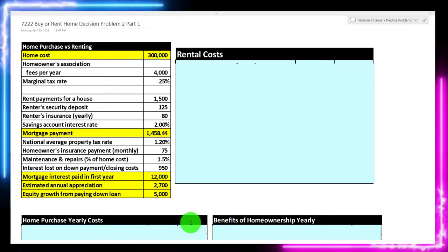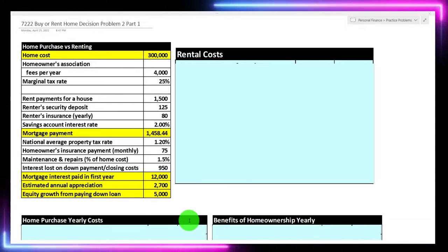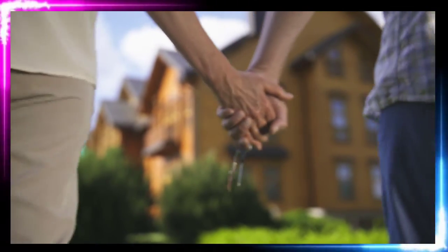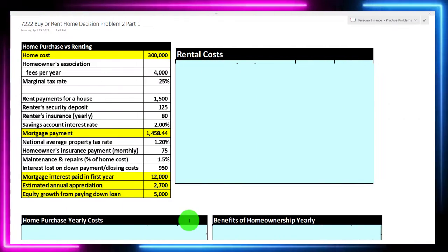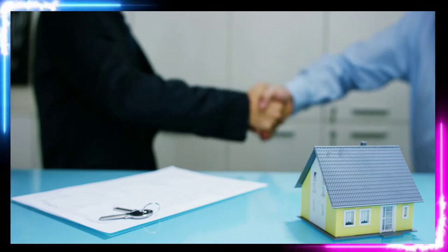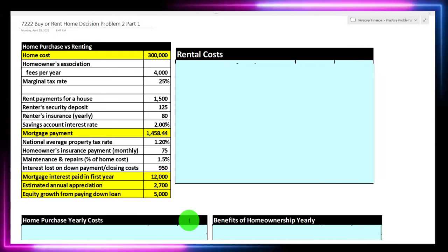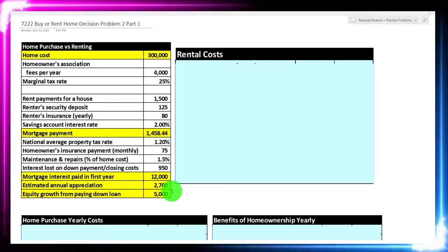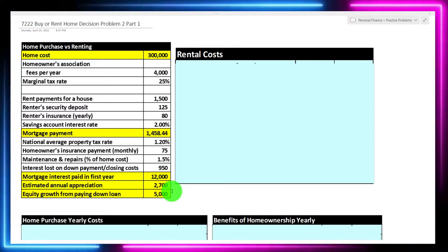We're comparing and contrasting the yearly costs and benefits from renting versus purchasing a home. This could be useful if your decision is to go from renting to purchasing a home, or if you're thinking about buying a rental property and considering the rent as potential income. When making a financial decision with two paths — such as renting or purchasing — we focus on differential factors, those that are different between the two options. We're not so much focused on the initial purchase, but rather comparing yearly costs and benefits after the purchase.